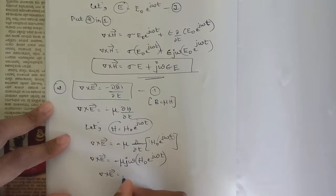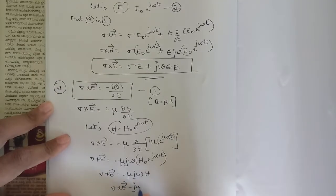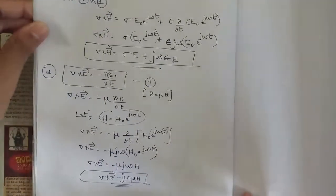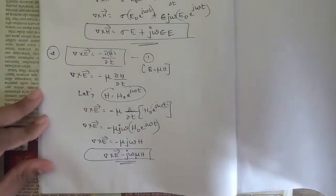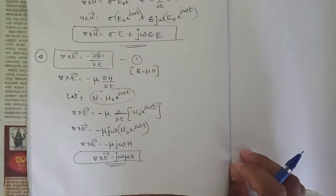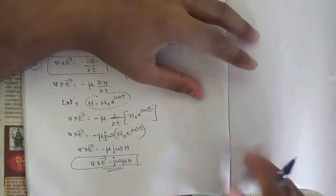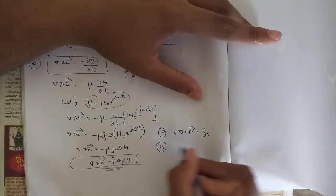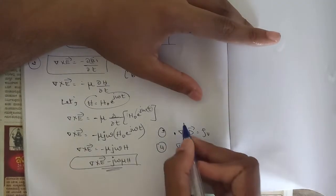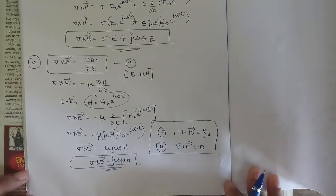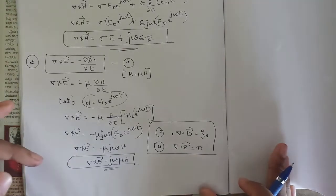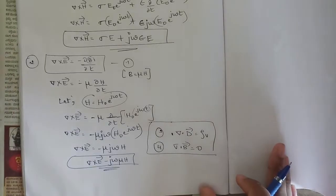So del cross E = −jωμH. This is the modified second Maxwell's equation from Faraday's law for time-changing fields. The remaining two equations from Gauss's law for electrostatics and magnetostatics remain unchanged for time-changing fields: del·D = ρv and del·B = 0. These two equations do not change with time-varying fields.